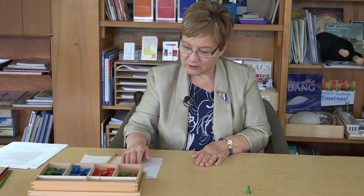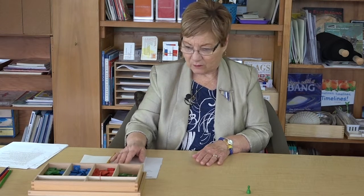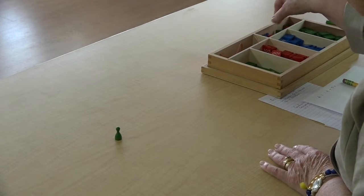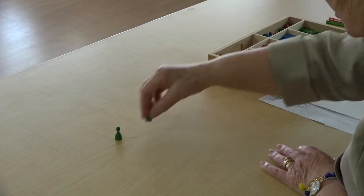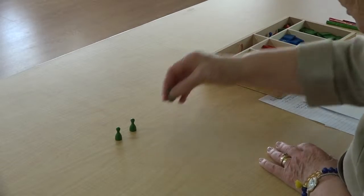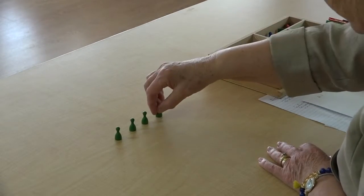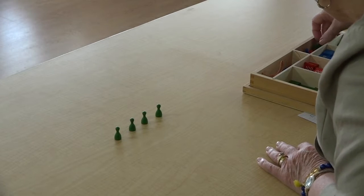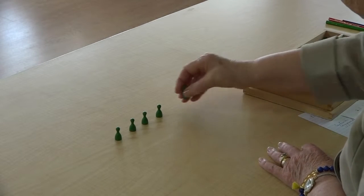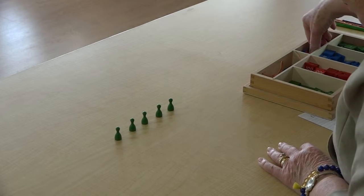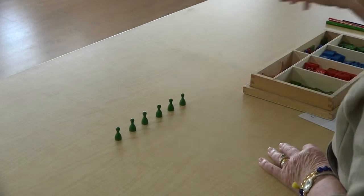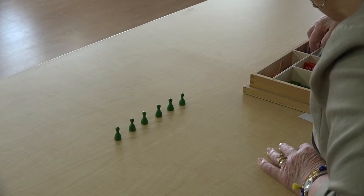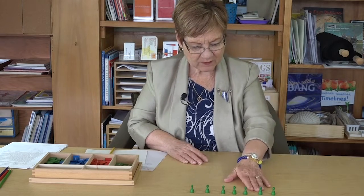So if the skittle represents our divisor, and I said our problem is 2,114 divided by seven, how many skittles will we be getting out? Right, we'll be getting out seven skittles. And we're going to get out seven green skittles, because the green represents the units. Anything up to nine. Okay, we have seven skittles.